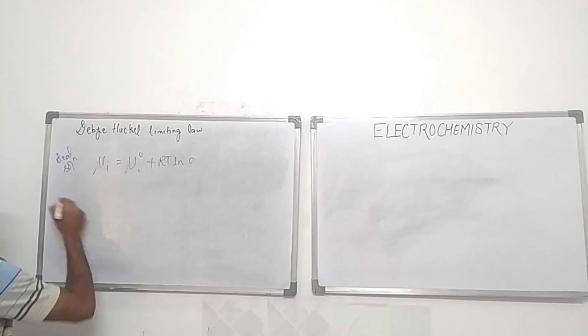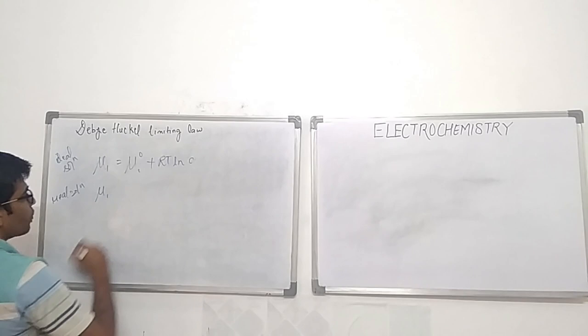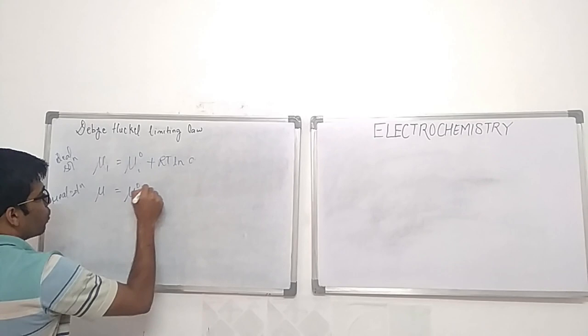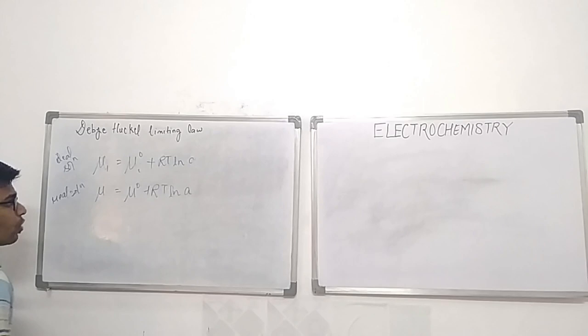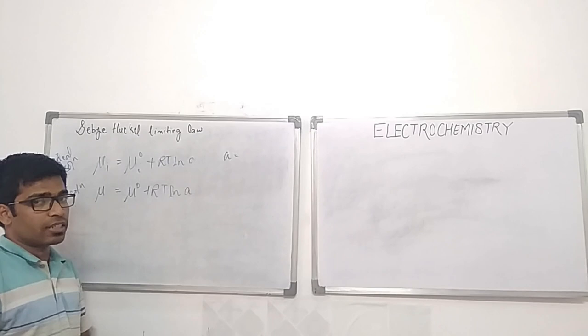For a real solution or non-ideal solution, this changes to μ equals to μ₀ plus RT ln A, where A is the activity — the effective concentration.